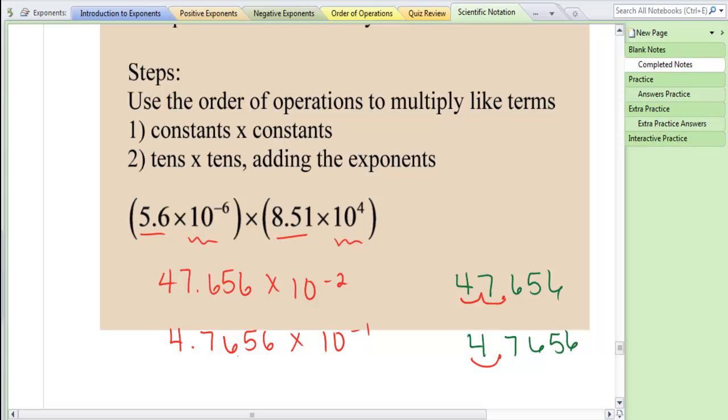Your answer is 4.7656 times 10 to the negative first. So you end up with initially this number right here: 47.656 times 10 to the negative seventh. But we have to have only one digit to the left of the decimal, so we're going to move that decimal over, which means we have to adjust our exponent.